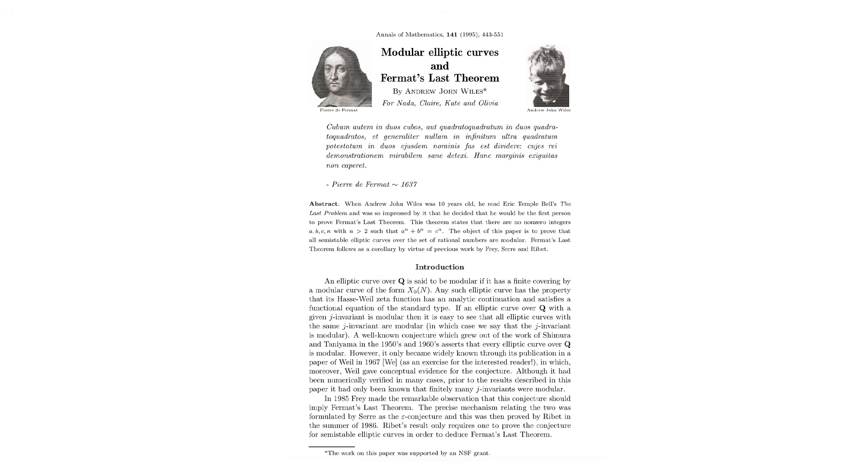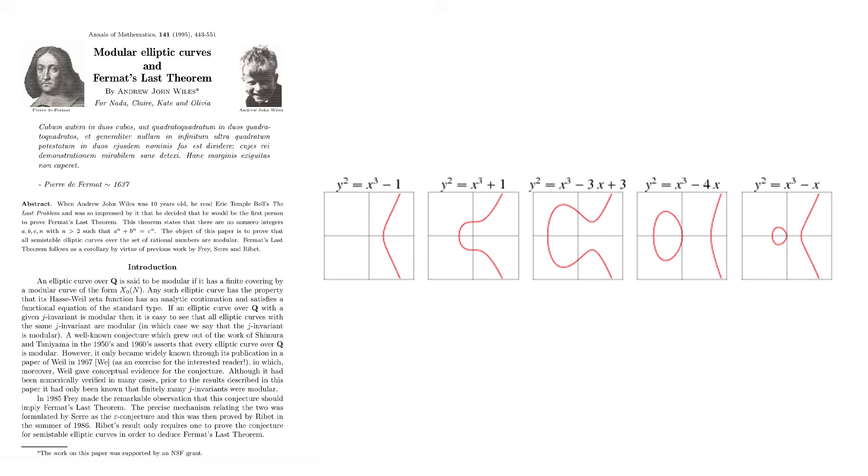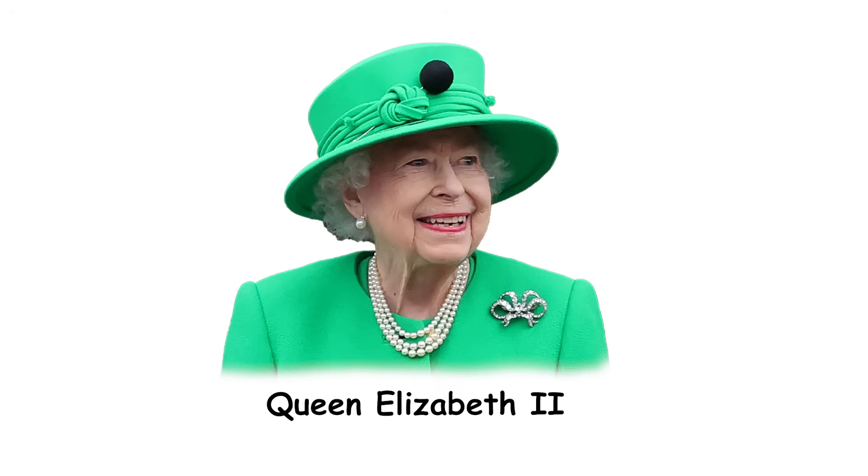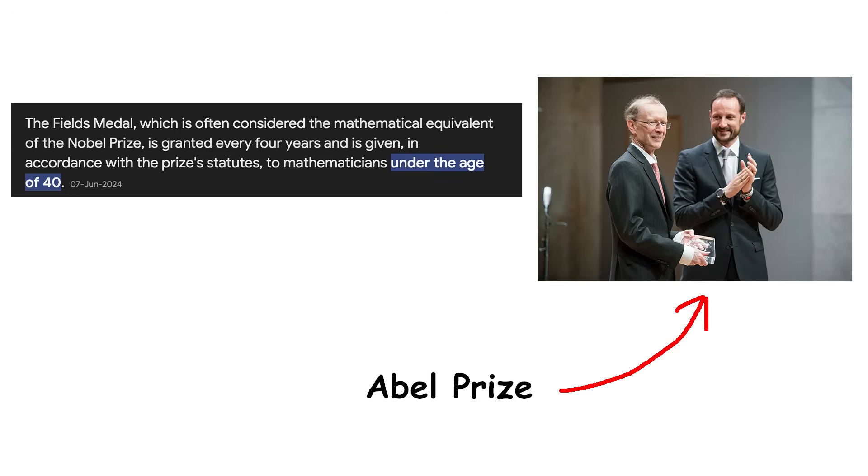Since the Taniyama-Shimura Conjecture implied Fermat's Last Theorem, Wiles had finally solved a 300-year-old mathematical mystery. The techniques he used such as the elliptic curve were completely unknown in Fermat's time, leading many to believe that Fermat did not actually have proof of his Last Theorem. As a reward, Queen Elizabeth II knighted Wiles and he received a special award instead of the Fields Medal, because he was slightly too old to receive the Fields Medal.